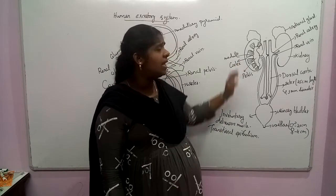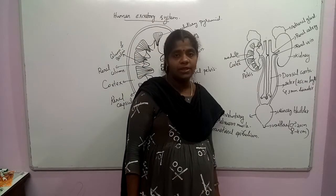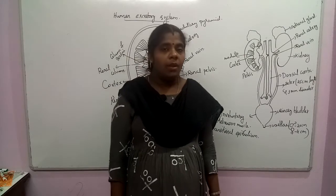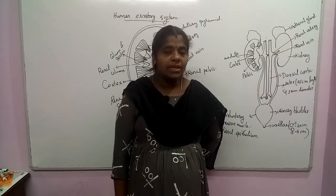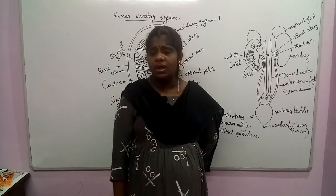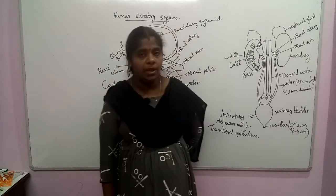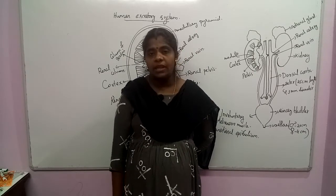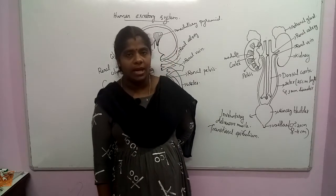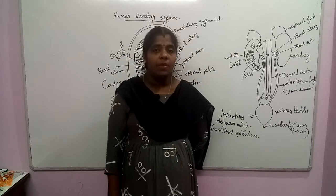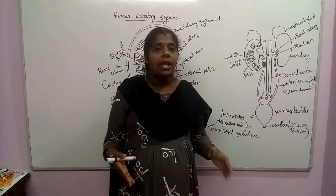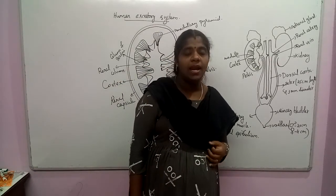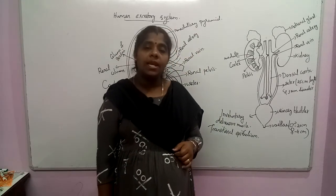Inside the kidney, there is a funnel-shaped broad structure called the renal pelvis, which is attached to the capsule region. The medullary pyramid projects into the renal pelvis through structures called calyces. The cortex protrudes between the medullary pyramids forming the renal column, which extends as the column of Bertin.